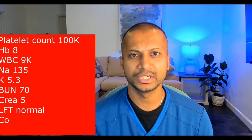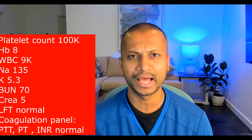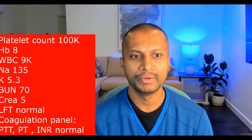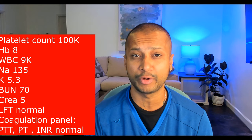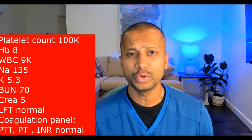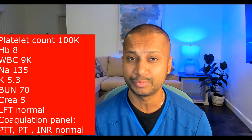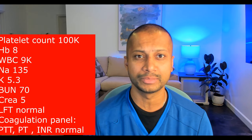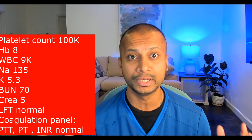We get a CBC. The patient's platelet count is 100,000, hemoglobin is 8, and WBC is 9 and normal. On chemistry, we see a sodium of 135, potassium of 5.3, BUN of 70, and a creatinine of 5 — wow, that's pretty high. LFTs are normal and the coagulation panel including PTT, PT, and INR are completely normal.